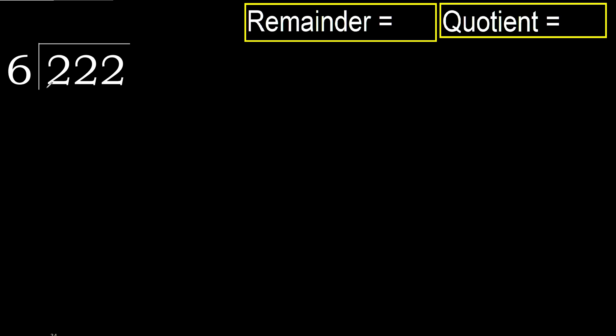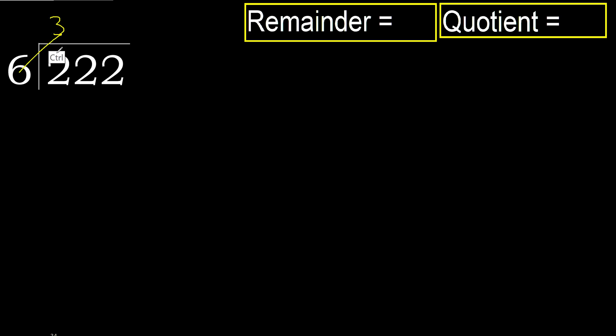222 divided by 6. 2 is less, therefore next. 22 is not less, therefore with 22: 6 multiplied by which number is nearest to 22 but not greater? 6 multiplied by 4 is 24 — 24 is greater. 6 multiplied by 3 is 18, which is not greater.